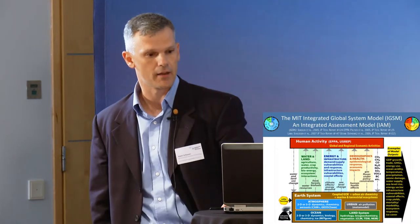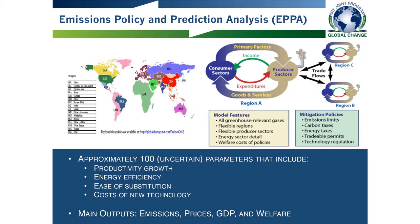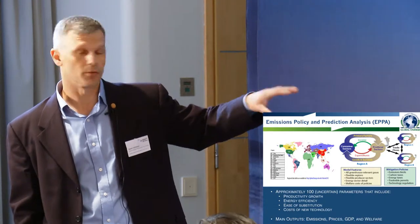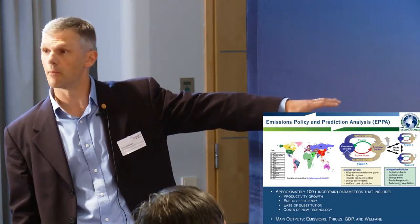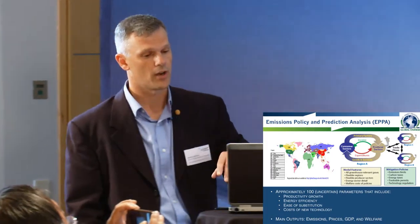This gives you a summary of what the human system model — the EPPA model, Emissions Prediction and Policy Analysis model — does. There are some important uncertain parameters in the model. The main output, again, is emissions for the earth system model. For the work that Ken and Channing will talk about, some of the other important outputs from the model are prices, so the global prices from the economic model actually get fed into the regional economic model that Channing will talk about in just a second.